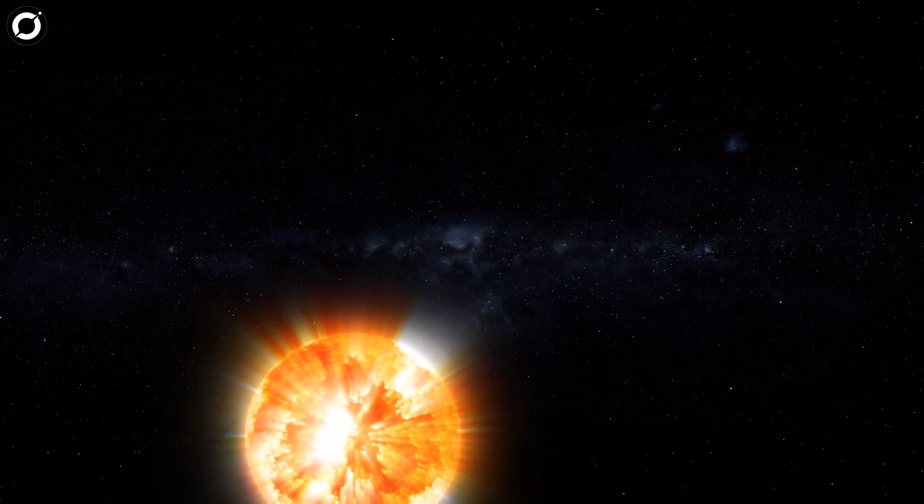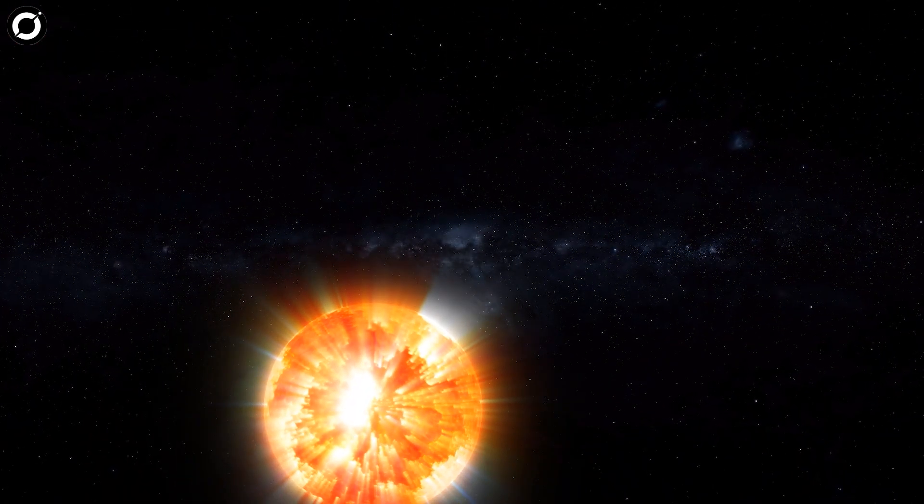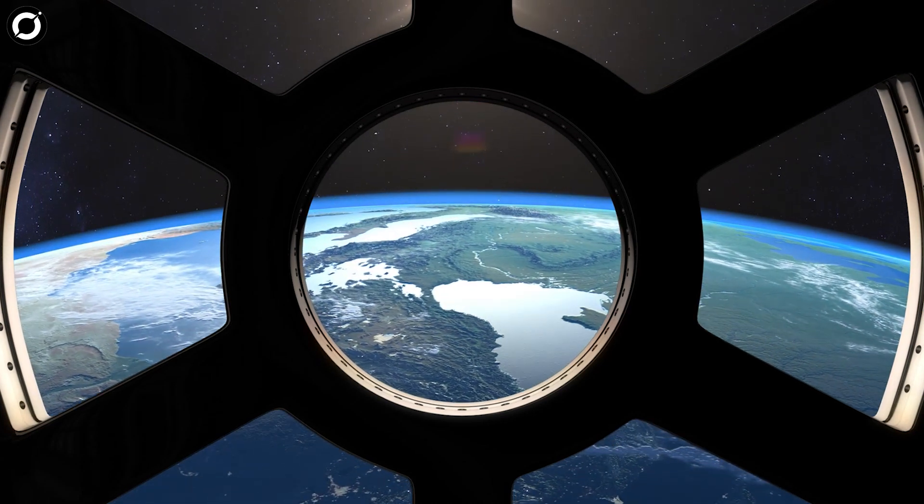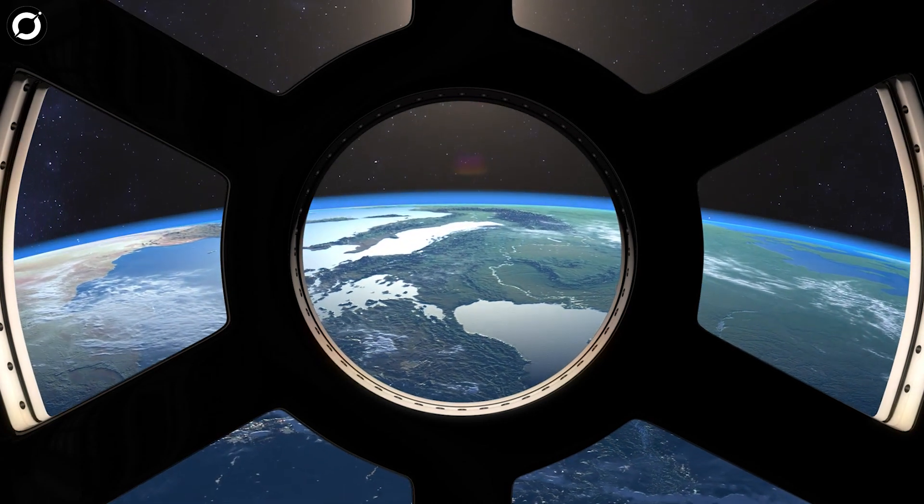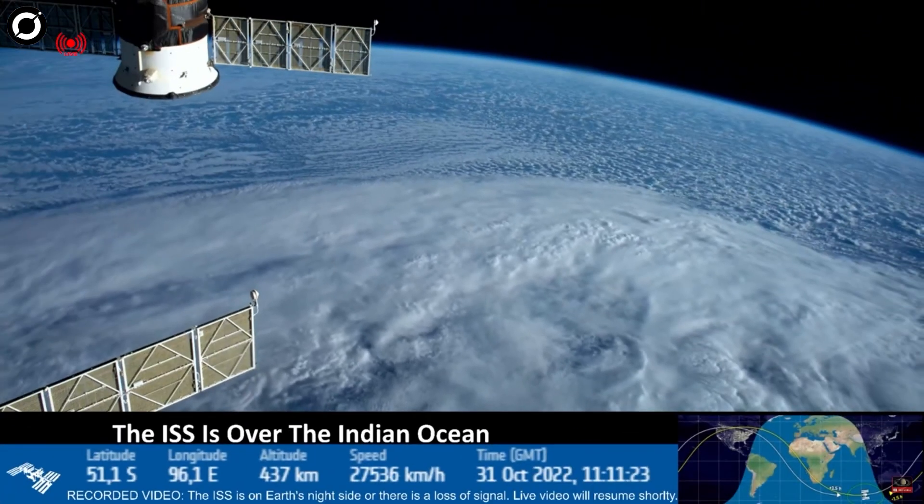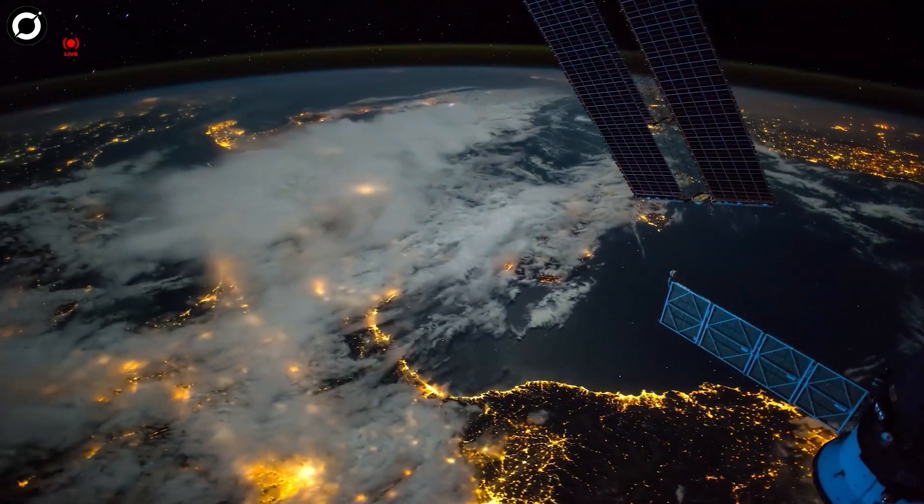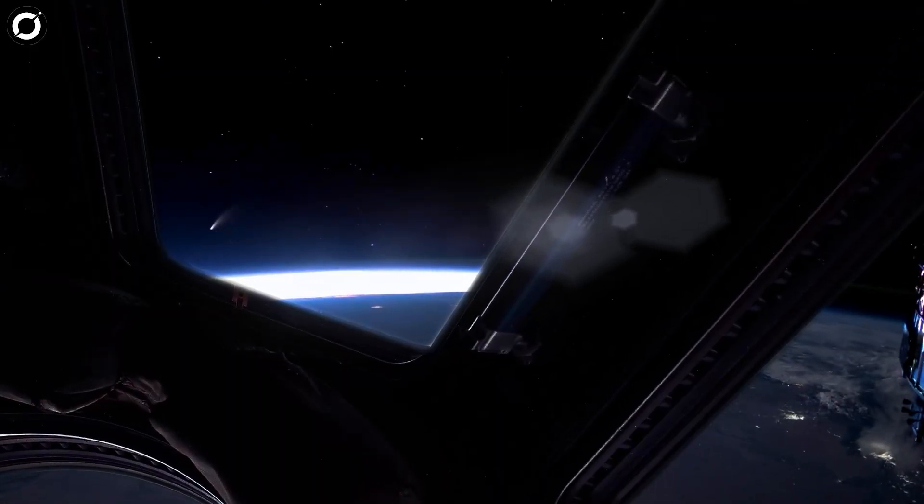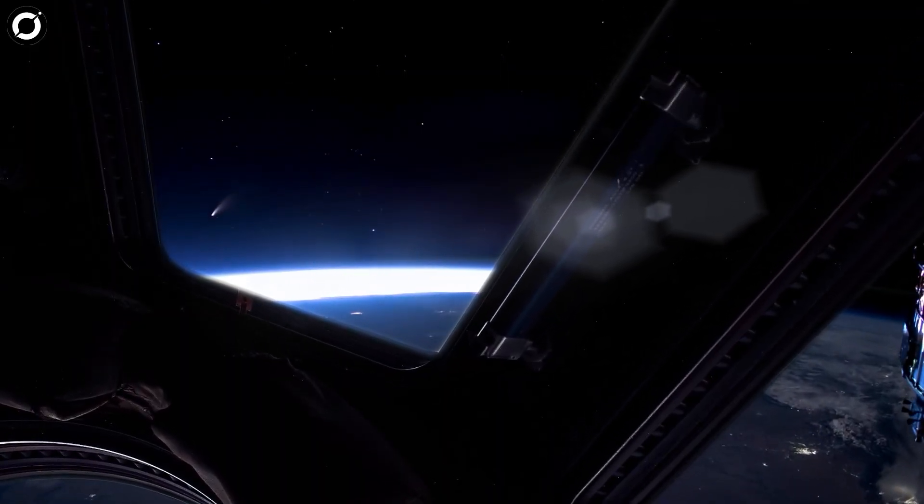This is not the first time that live feed has got cut off when something strange appears or happens. The International Space Station also has a live streaming video feed which allows space enthusiasts to view the Earth and outer space via cameras that are fitted underneath the orbiting structure.